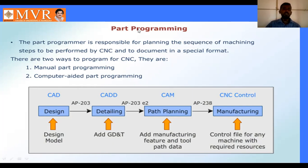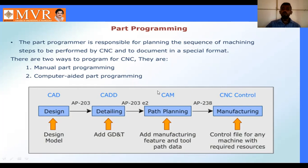So that is our path programming overview. The path programmer is responsible for planning and the sequence of machining steps to be performed by CNC, with documentation in a special format. There are two ways to program for CNC: manual path programming and computer-aided path programming. The workflow is: first CAD, then CAM, then CNC.